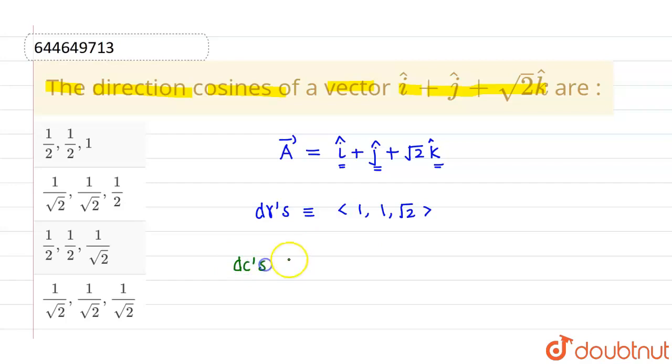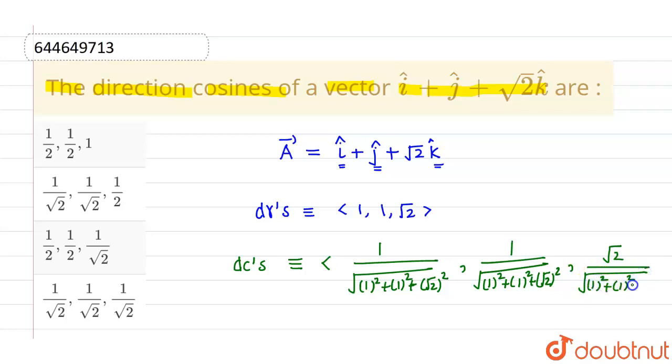So the dc's of the same vector will be given by 1 divided by magnitude of vector which is root of 1 square plus 1 square plus root 2 square. Similarly, second will be 1 divided by root over 1 square plus 1 square plus root 2 square. And similarly, third will be root 2 divided by root over 1 square plus 1 square plus root 2 square.